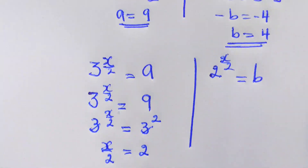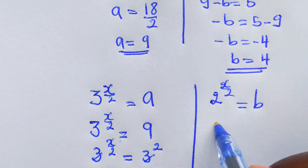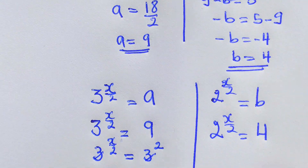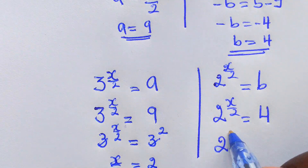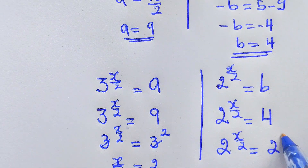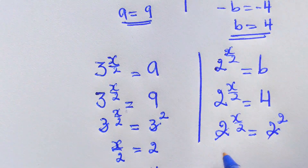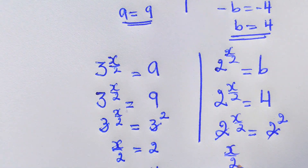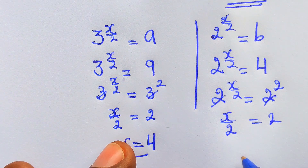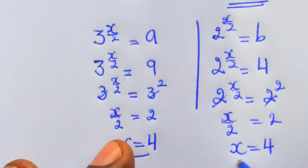On the other side, we have 2 power (x over 2) equals b, which equals 4. Since 4 equals 2 squared, we get 2 power (x over 2) equals 2 power 2, so x over 2 equals 2 and x equals 4. Both confirm x equals 4.